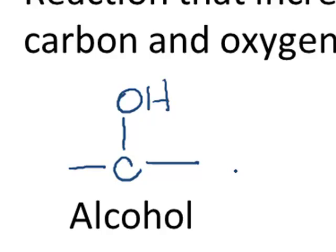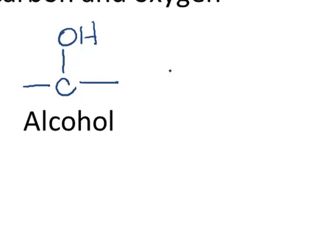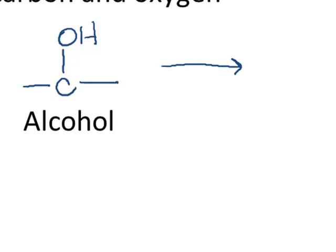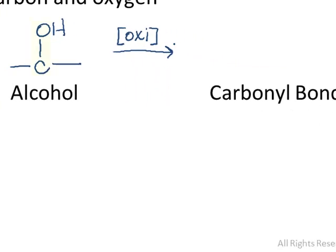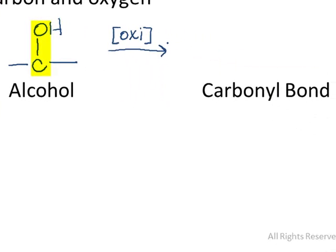The carbon-oxygen single bond is part of what defines the alcohol functional group. When we do an oxidation reaction on an alcohol, there's a variety of products that can result. In general, if we want to represent that we're doing an oxidation reaction without being specific about our reactants, we typically write an O or an OXI in brackets. That's a general form that means use an oxidizing agent here. When we do that to an alcohol, we'll take the carbon-to-oxygen single bond and change it to a carbonyl bond.